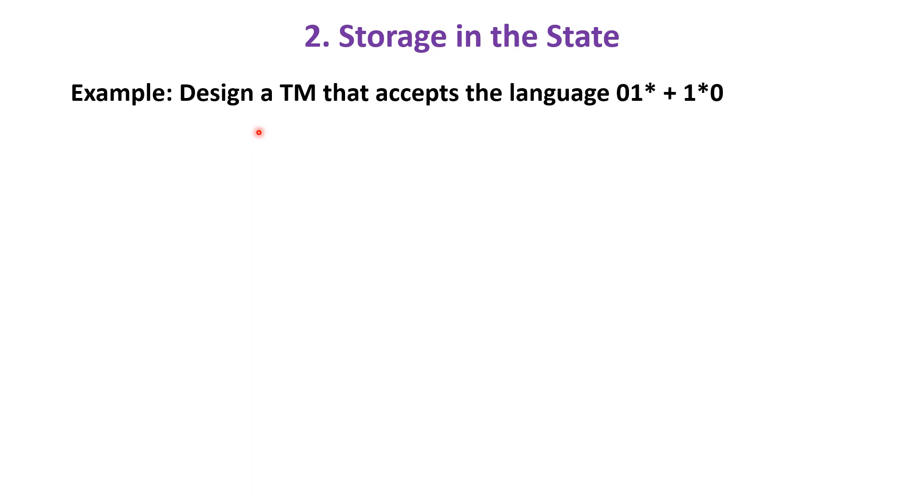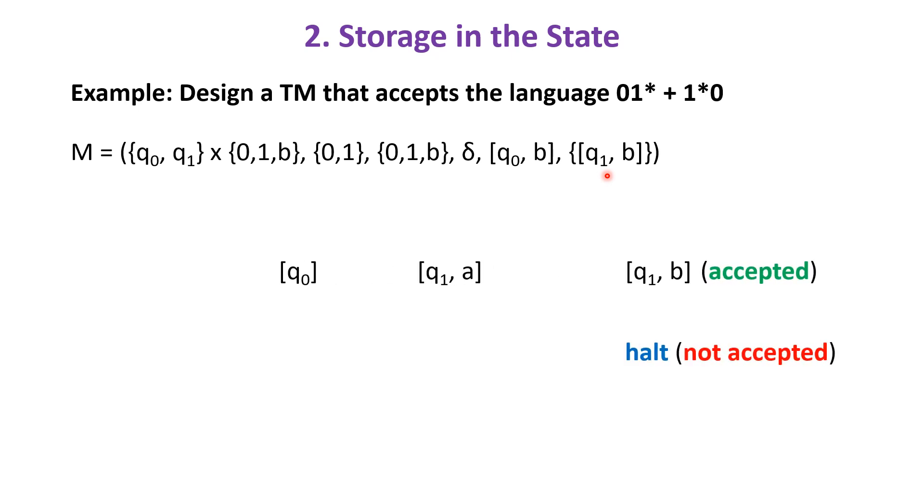For example, let us design a Turing machine that accepts the language 0¹ * 1*0 using storage in the state. The machine consists of two states q0, q1 with tape input symbols 0, 1, B, initial state [q0, B] and final state [q1, B].